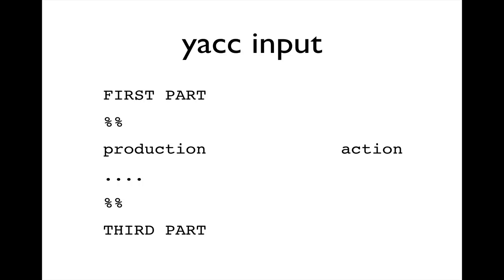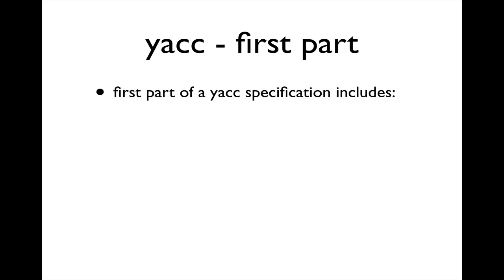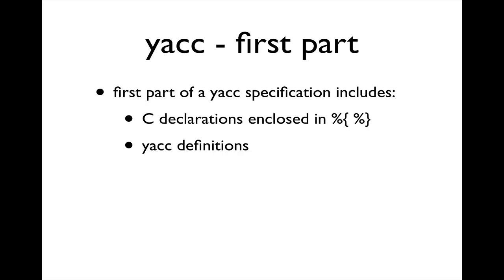What does a YACC file look like? It looks very similar to LEX files. The first part of the file is separated from the middle part with %%. In the middle part we put our productions or grammar rules, and with every production we can have an action written in C — a single statement terminated with a semicolon, or multiple statements in a code block. There's a third part as well, separated from the middle section with %%. The first part contains C declarations enclosed with %{ and %}, plus special YACC definitions.